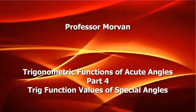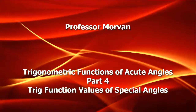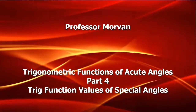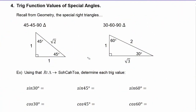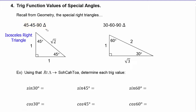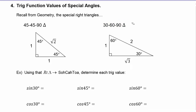In part four of our lesson on trigonometric functions of acute angles, we're going to learn about the trig function values of special angles. Back in geometry class you studied two very special right triangles: the 45-45-90 triangle, also called an isosceles right triangle, and the 30-60-90 triangle. We're going to use these two triangles to find the trig function values of 30 degrees, 60 degrees, and 45 degrees.